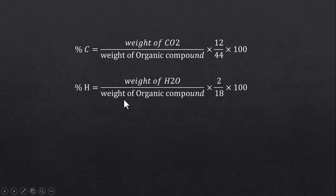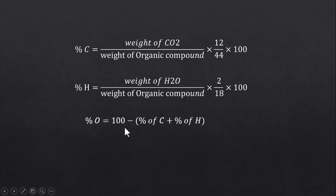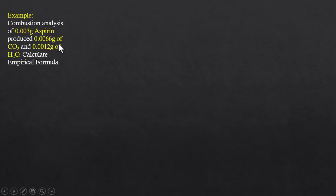Ultimately, oxygen can be calculated indirectly by subtracting the amounts of carbon and hydrogen from 100. Let's see a practical example: combustion analysis of 0.003 grams of aspirin produced 0.006 grams of carbon dioxide and 0.0012 grams of H₂O. Calculate the empirical formula.